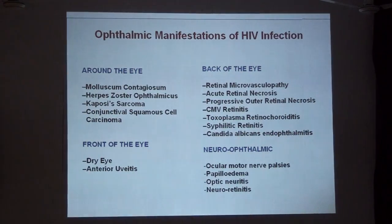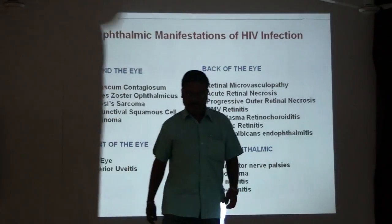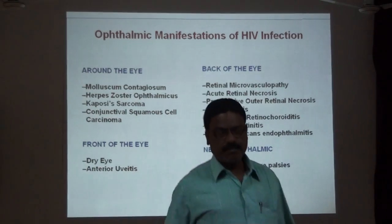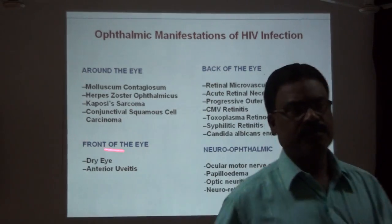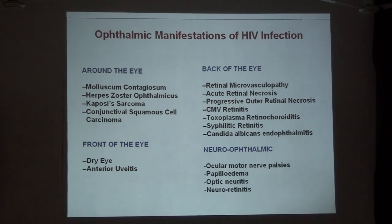This is the full list of ocular manifestations that can occur in HIV infection. It can be divided into those around the eye and ocular adnexa — including molluscum contagiosum, herpes zoster ophthalmicus, Kaposi's sarcoma, and conjunctival squamous cell carcinoma.